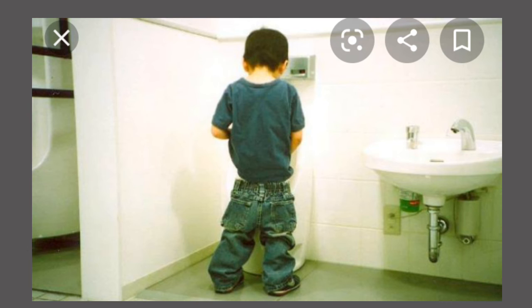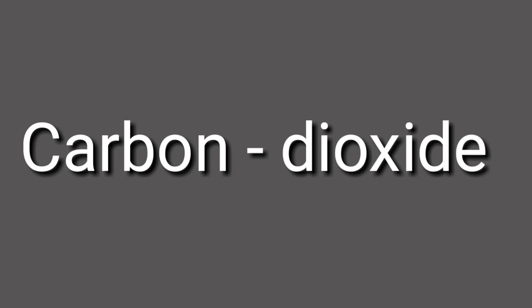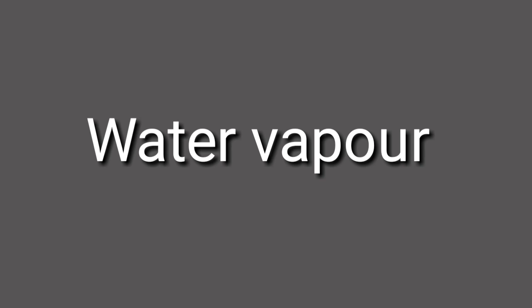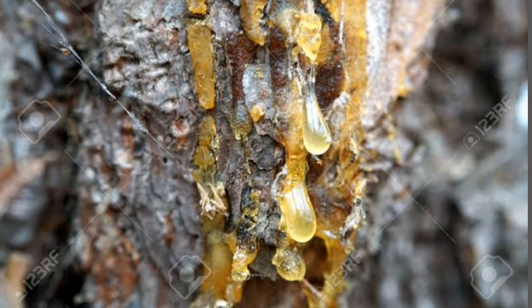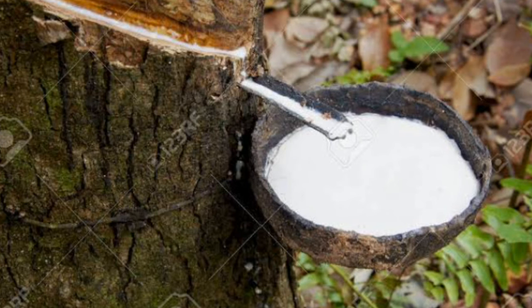The next characteristic is excretion. Excretion means the removal of waste material from the body. In living beings, waste materials are removed mainly in the form of urine, sweat, and carbon dioxide. In plants, carbon dioxide and water vapor are excreted through the leaves. In some plants, waste is given out in the form of gum or a thick fluid called latex.